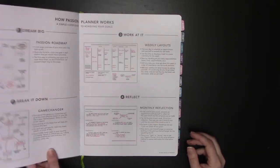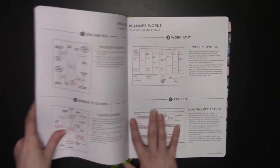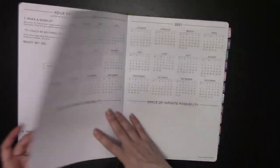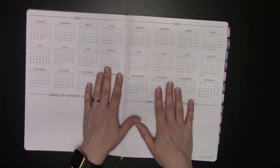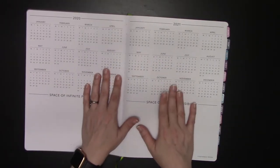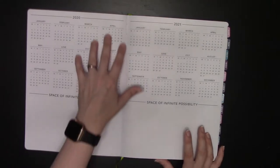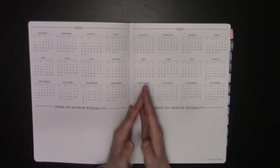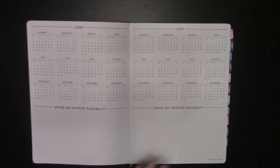If you get an academic planner, the first few pages are the same as the other planners, but you're going to notice your calendars span the same two years that the planner spans. This planner has 12 months, but they're in two different years because it follows an academic year calendar.